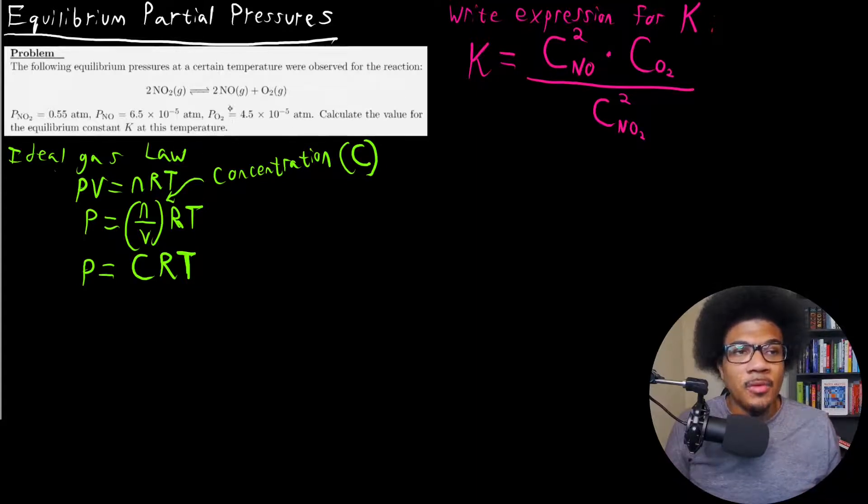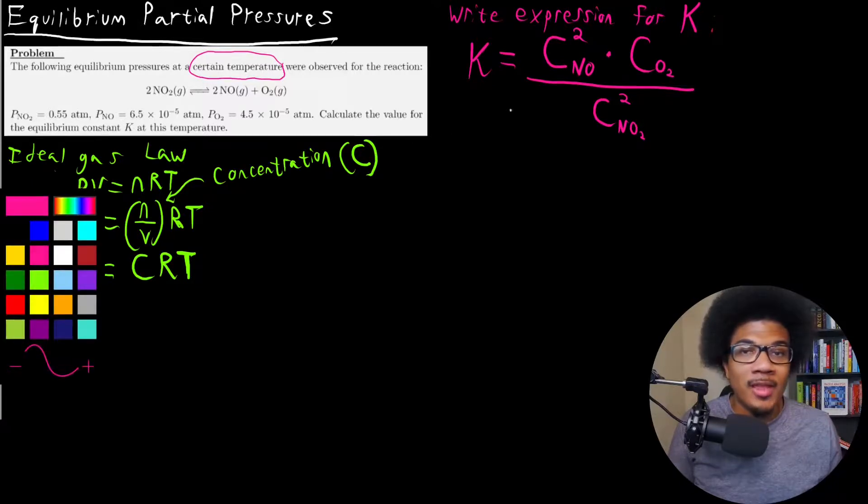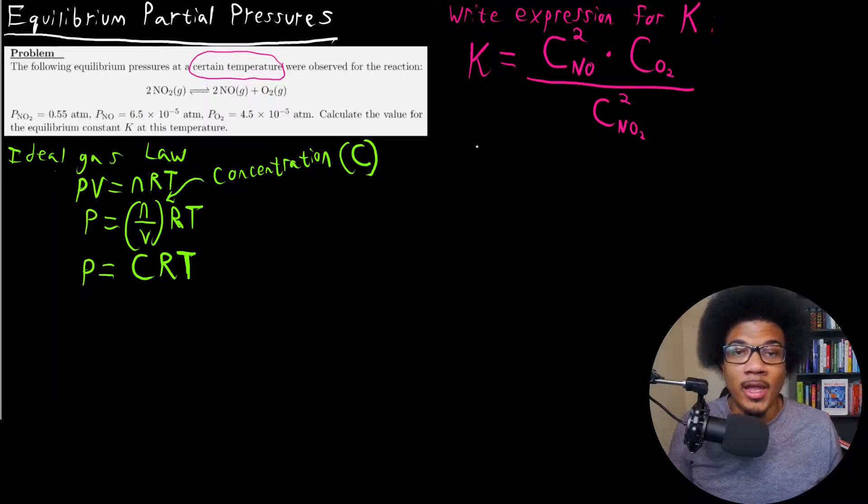Now, it tells you that there's gonna be a constant temperature. It says at a certain temperature. So the temperature is constant. So for the sake of a constant temperature, this pressure and concentration are going to be directly proportional. So at a constant temperature, we can actually rewrite this equilibrium constant expression in the following way.